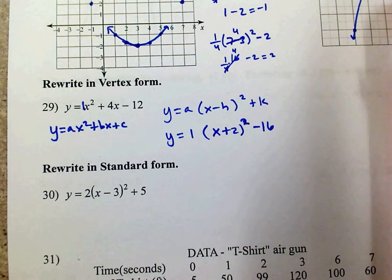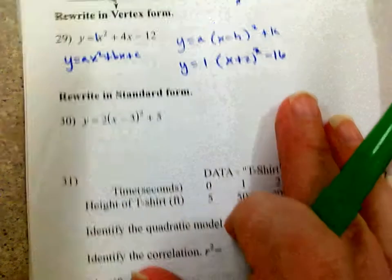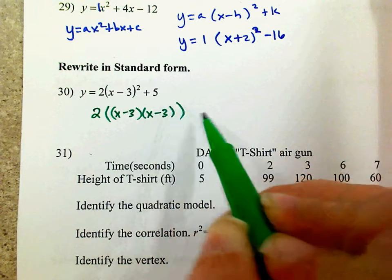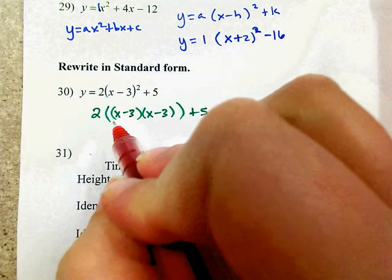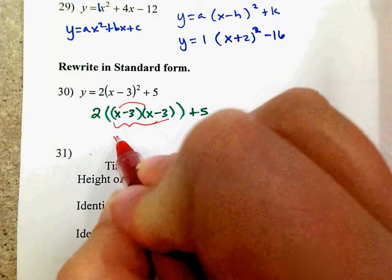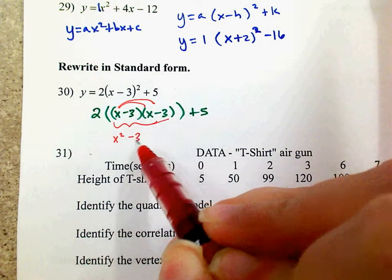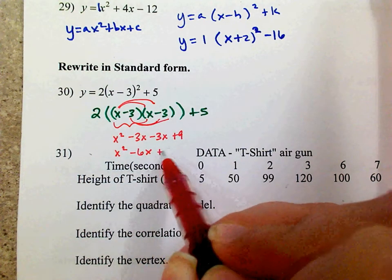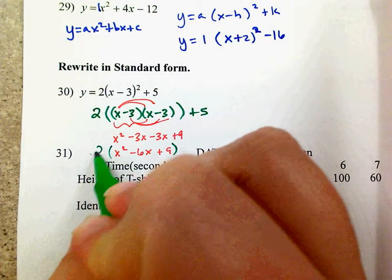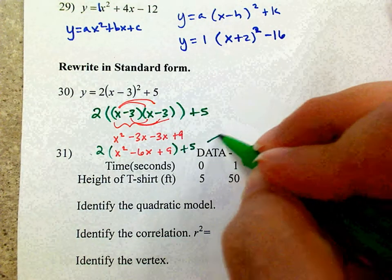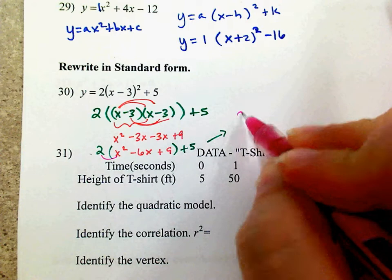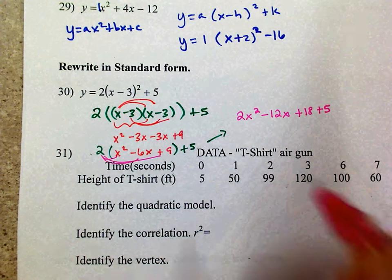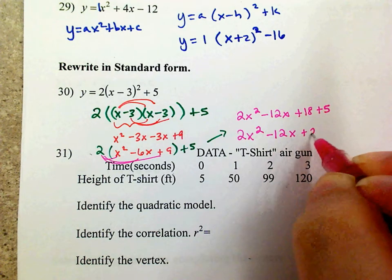To convert to standard form, I'll expand (x − 3)² + 5 first. (x − 3)² = x² − 6x + 9. Multiplying by 2 gives 2x² − 12x + 18, then add 5 to get 2x² − 12x + 23. But wait — working with (x + 2)² minus 16: expand to x² + 4x + 4, multiply by negative 1/2, distribute, add 6, and the final standard form answer is negative 1/2 x² minus 2x plus 4.